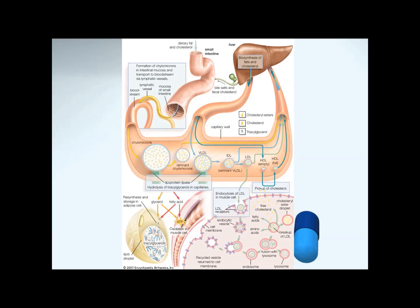That cholesterol can then be excreted in the bile and removed from the intestine, or recycled. This diagram also has an extra section showing how a cell deals with LDL. LDL in the circulation can actually be taken into various cells because LDL, like these other lipoproteins, has receptors that allow it to dock onto cells. It docks on and the whole thing is taken into the cell in a vesicle. Once the vesicle has been absorbed, it fuses with lysosomes and the entire thing is broken down — releasing fatty acids, cholesterol, and even amino acids from the breakdown of the outer proteins of the LDL.